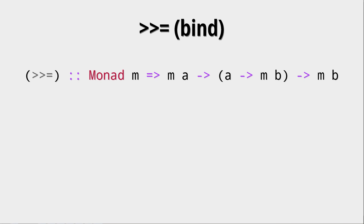So this is interesting, because we get the internal type of the monad. So in the case of a Maybe, a Just One has the internal value one. And an IO action, for example, also has some internal value. A getLine has some internal string. So this bind operator seems to be able to extract that value.